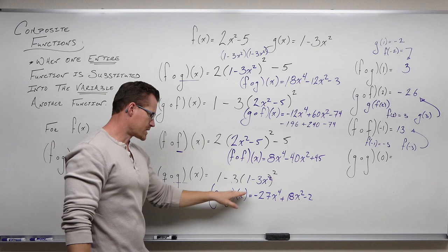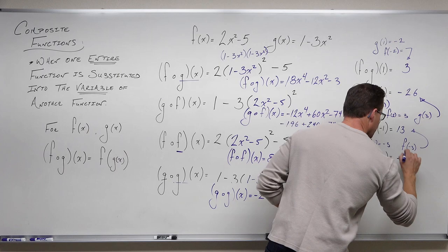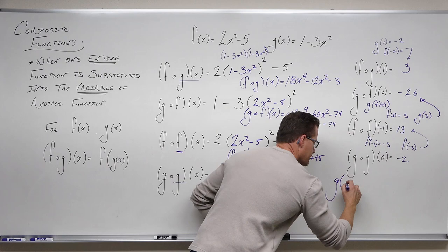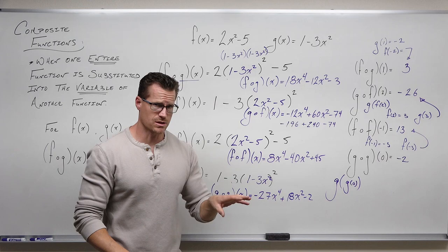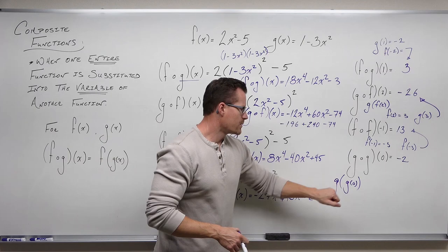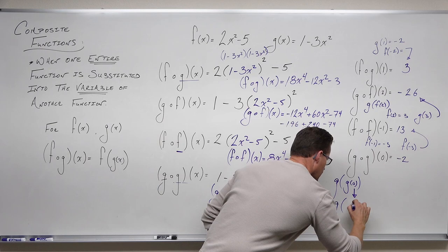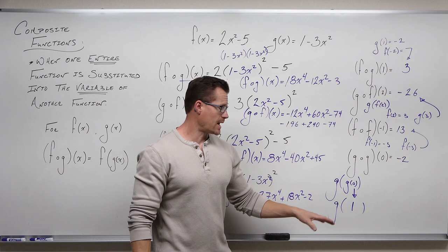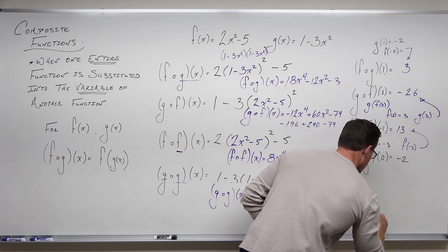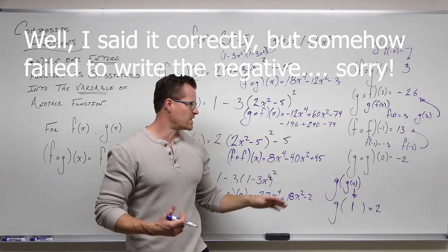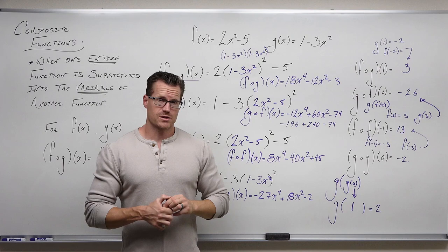The last one: g of g of 0. Using our simplified g of g of x, plug in 0 and we get negative 2. Alternatively: g of 0 is 1 minus 3 times 0 squared, which is 1. That output of 1 becomes the input for g again. g of 1 is 1 minus 3 times 1, which is negative 2. That matches exactly — we know this is correct.